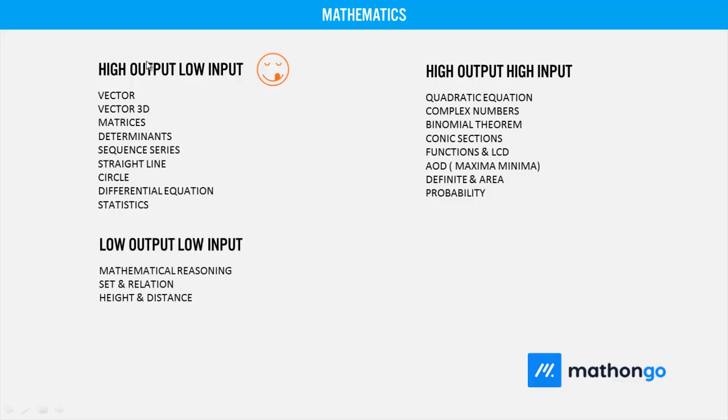Coming to low output low input game: mathematical reasoning, set and relation, and height and distance. Obviously, those students who have the most tension for these three - I don't know why, when the above two topics are only there to study. But people have more tension for this. This is low output and low input. Low output - some people might not agree with us, they'll say height and distance is high output. No, we are talking about the last 10 years - how many questions have been asked. One year it came, next year it didn't. So we don't consider it high output. But yes, these three are important because they are also low input games.